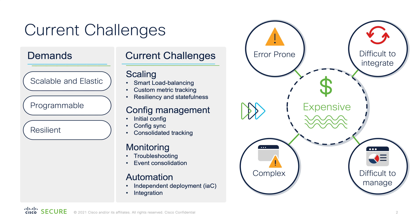Current challenges with traditional architecture is scalability — how exactly you will scale up and scale down when there is no requirement for additional resources. Config management, monitoring, and automation are the biggest challenges today. When we speak to our customers, we see a lot of demand for scalable and elastic architecture that is programmable and provides resiliency. Unless you have these capabilities built into the product, your solution can become expensive, difficult to manage, difficult to integrate, error prone, and complex.